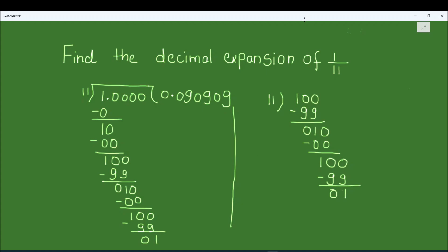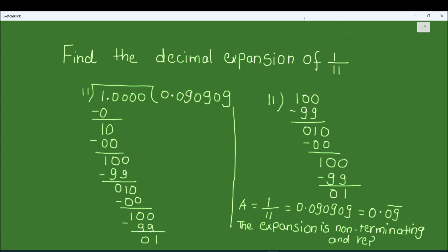This is a recurring decimal. Every time we get a remainder of 1, meaning this division is non-terminating. So 1 upon 11 equals 0.090909..., which we write as 0.09 with a bar on top of both digits. The expansion is a non-terminating repeating expansion.